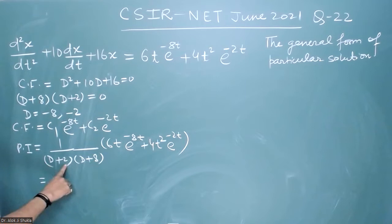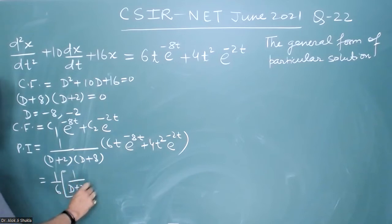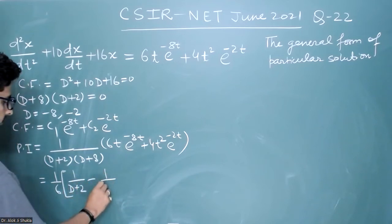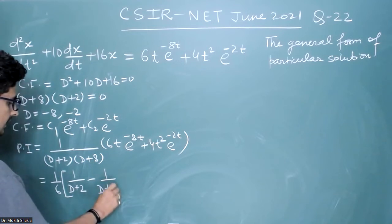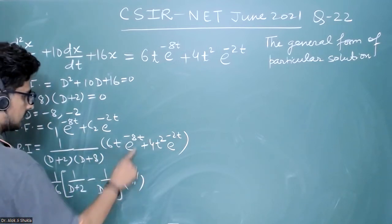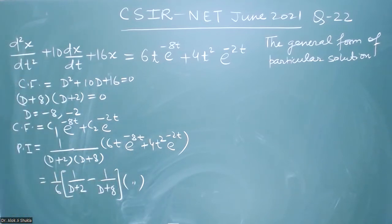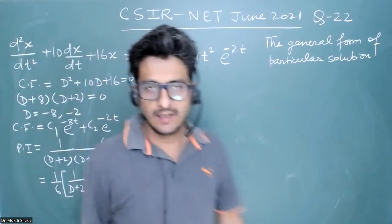So from 8 minus 2 I will get 6, and I will get (1/6)[1/(D+2) − 1/(D+8)] times the whole expression written there. Clearly you can see we will get four terms, and I should write them out to explain it.